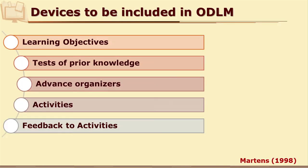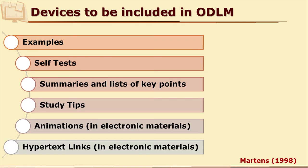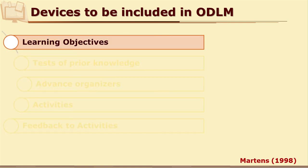Martin's devices include: learning objectives, tests of prior knowledge, advanced organizers, activities, feedback to activities, examples, self-tests, summaries and list of key points, study tips, and in electronic ODL material — animations and hypertext links.